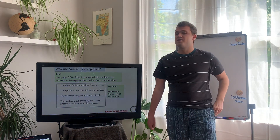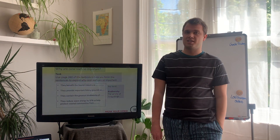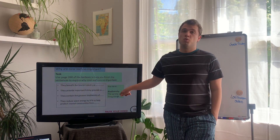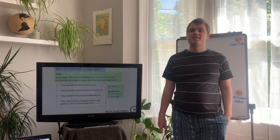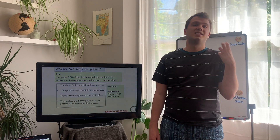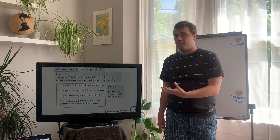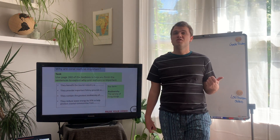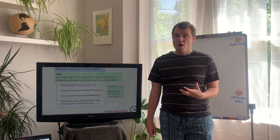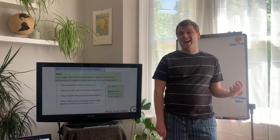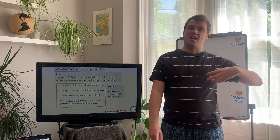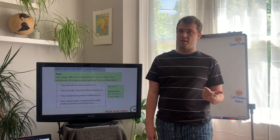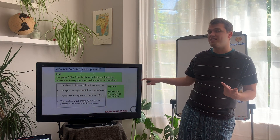Next, think about why coral reefs are important. Please copy out this key term: biodiversity - the variety of living things in an area. Tropical rainforests have huge biodiversity with thousands of different animals and plants; a sand dune system has limited biodiversity with only a small range of plants; and an urban area has very small biodiversity. Biodiversity is a really important term, so make sure you write it down and highlight it.